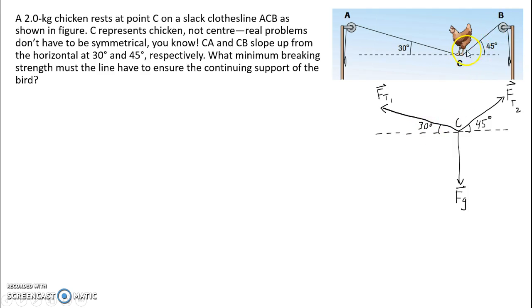Then we have another force of tension here in this part of the clothesline. We'll call that FT2 and that's 45 degrees to the horizontal. And then we have the force of gravity on the chicken, Fg.